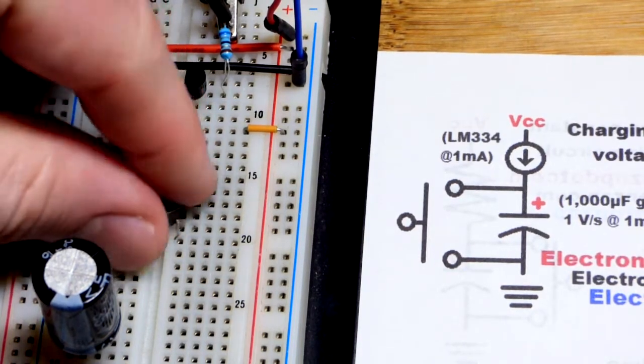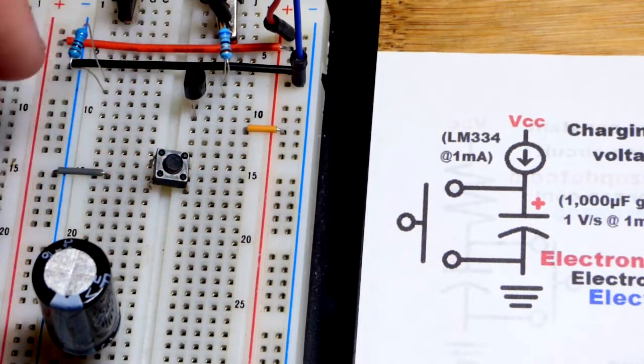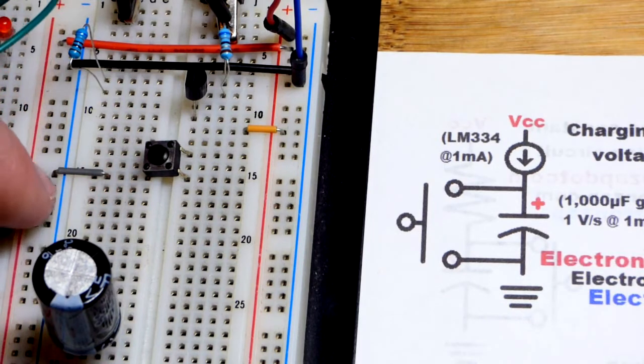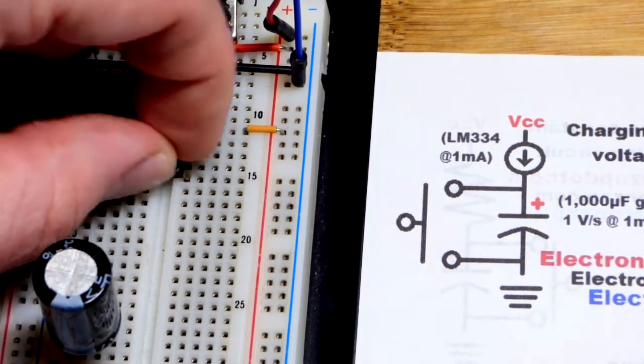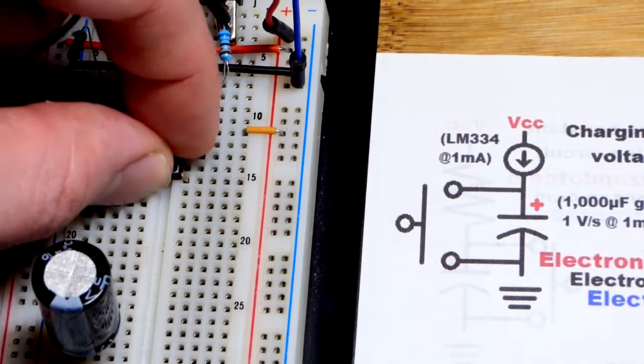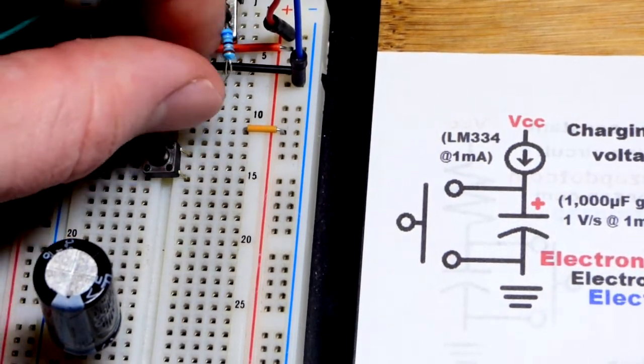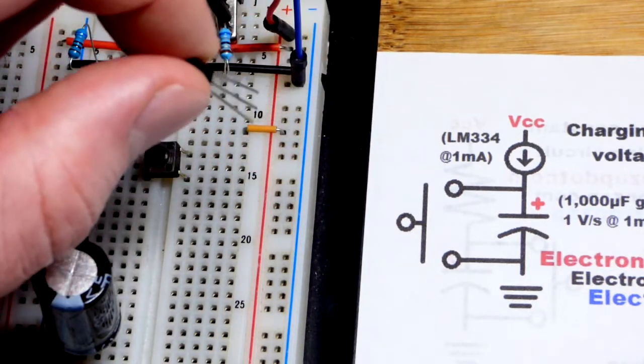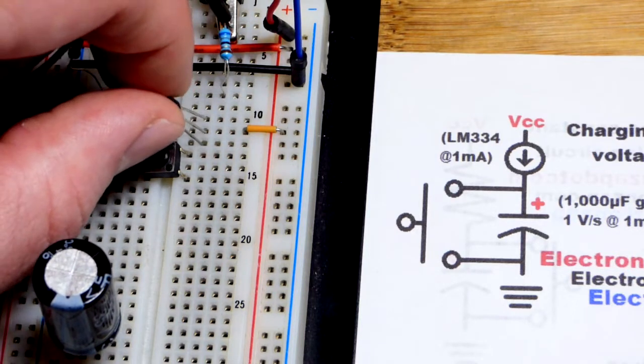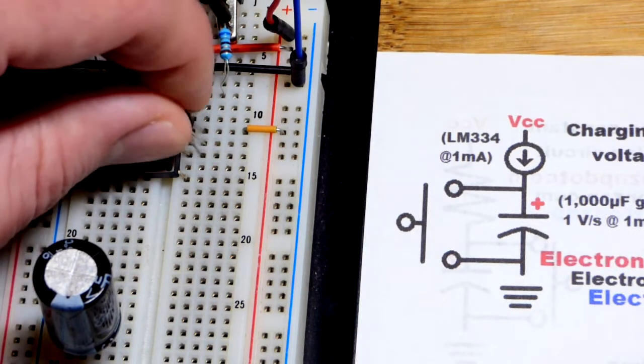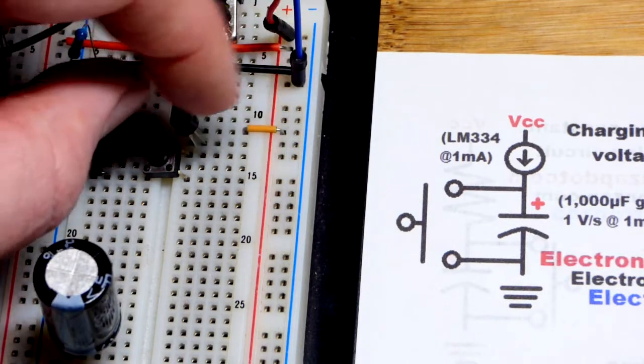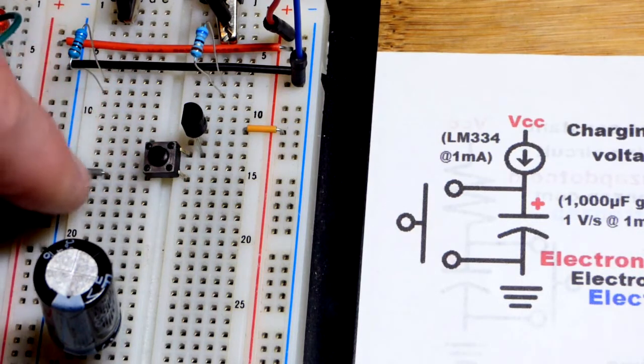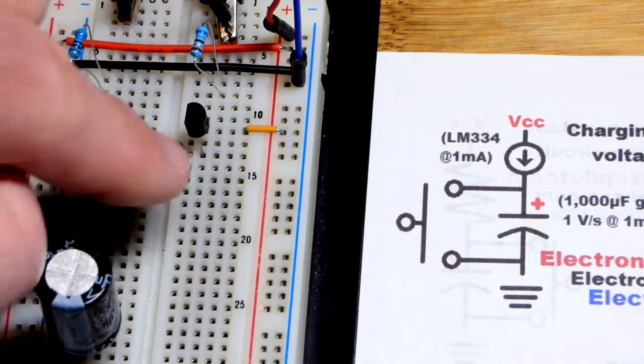So now building it on the breadboard, we'll start with the switch and move it up one spot there. There we have the bottom of the switch to the negative rail right there. Now up here, and the board really doesn't want the switch to stay in during these videos, here is the LM334. The positive side's on top, negative's on the bottom, and the middle pin is the R pin for the resistor. So we're going to put the positive voltage pin to the positive rail right there. And the negative here, when we close the switch, it will have a direct connection to ground right there, even though it's on opposite sides there.